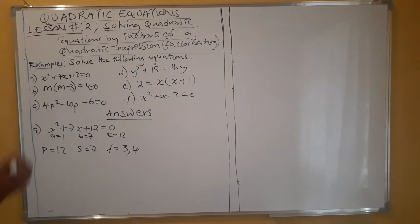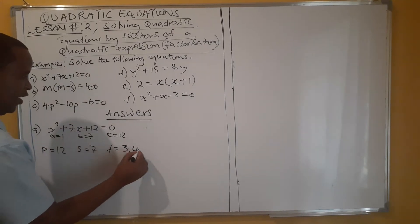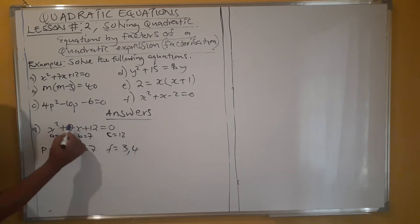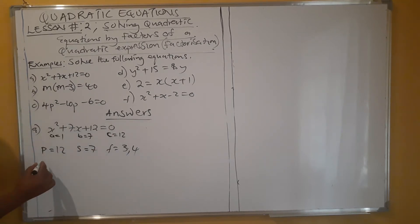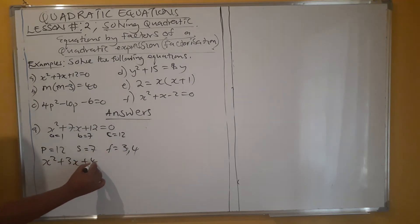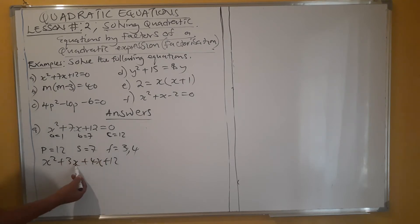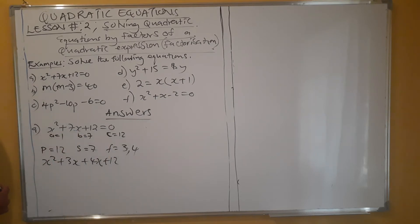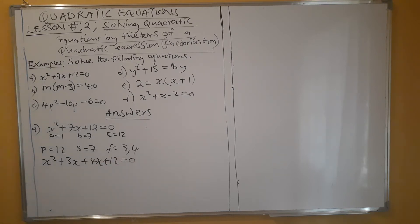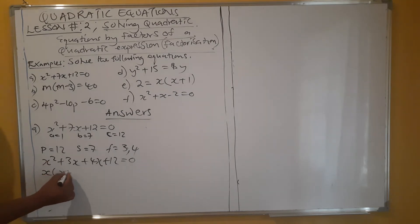Because the variable here is x, we split the middle term using 3x and 4x. We rewrite the expression as x² + 3x + 4x + 12 = 0. Note that 3x + 4x gives us 7x, so this is equivalent to our original equation.